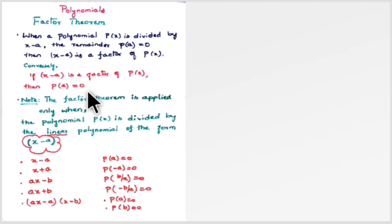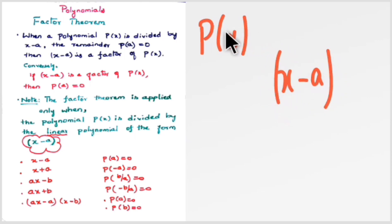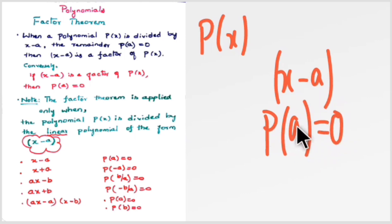Now, continuing with factor theorem: what factor theorem says is that when a polynomial p(x) is divided by (x − a), where (x − a) is the divisor and p(x) is the dividend, then the remainder will be p(a). If p(a) is equal to zero, then you can take (x − a) as a factor of p(x).